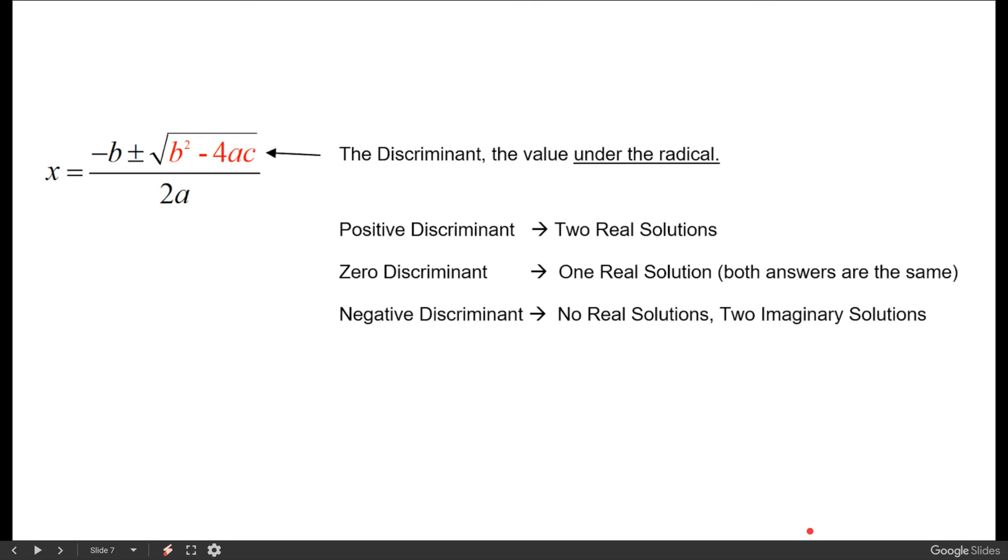So just to summarize, the discriminant is the value under the radical. If it's positive we have two real solutions. If it's 0 we have one real solution, both answers are the same. And if it's negative we have no real solutions, two imaginary solutions.